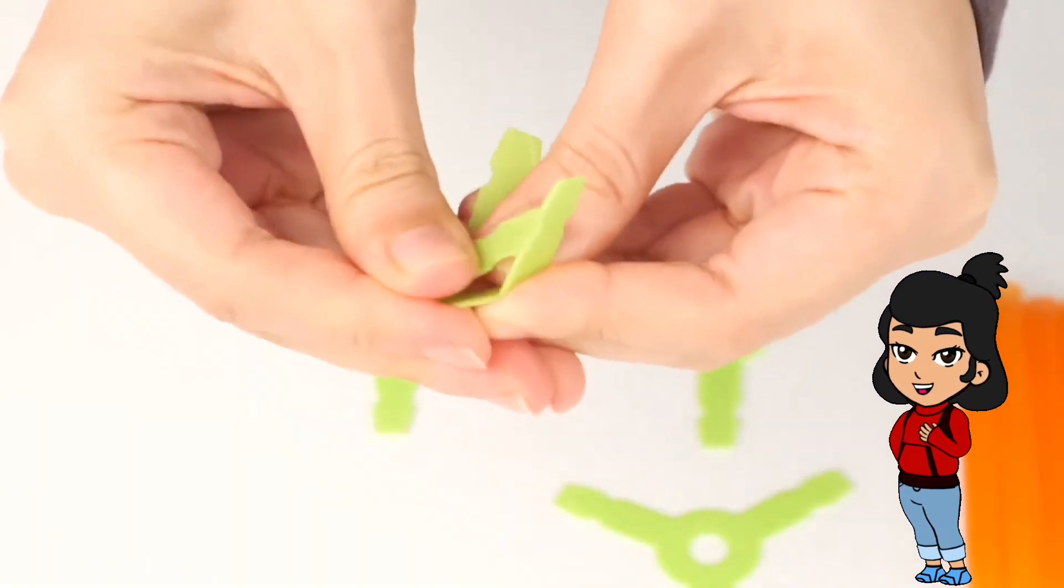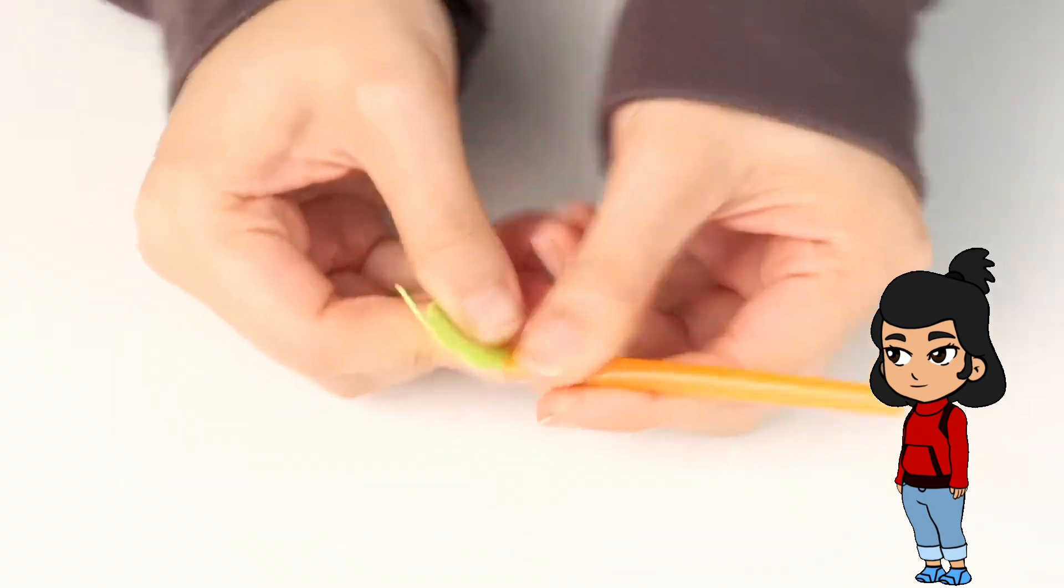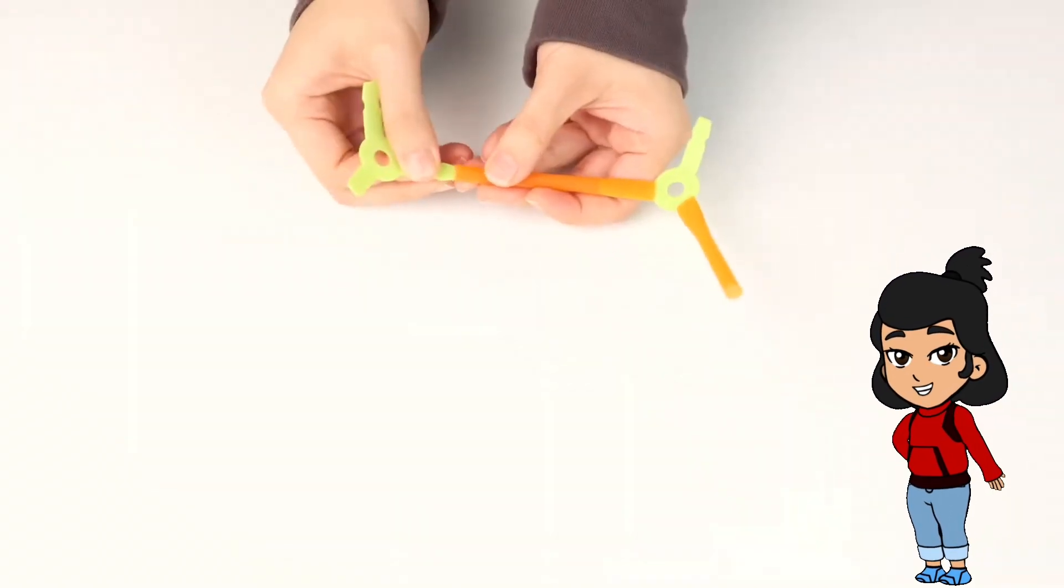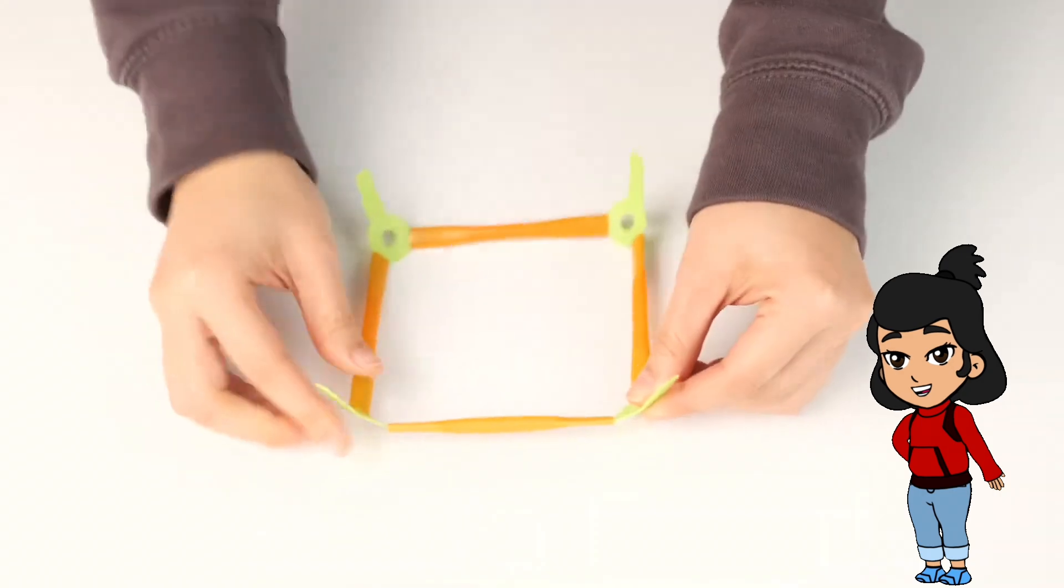Now, let's start building our 3D square, step by step. Step 1: Take one connector and attach two straws each and form a 2D square.